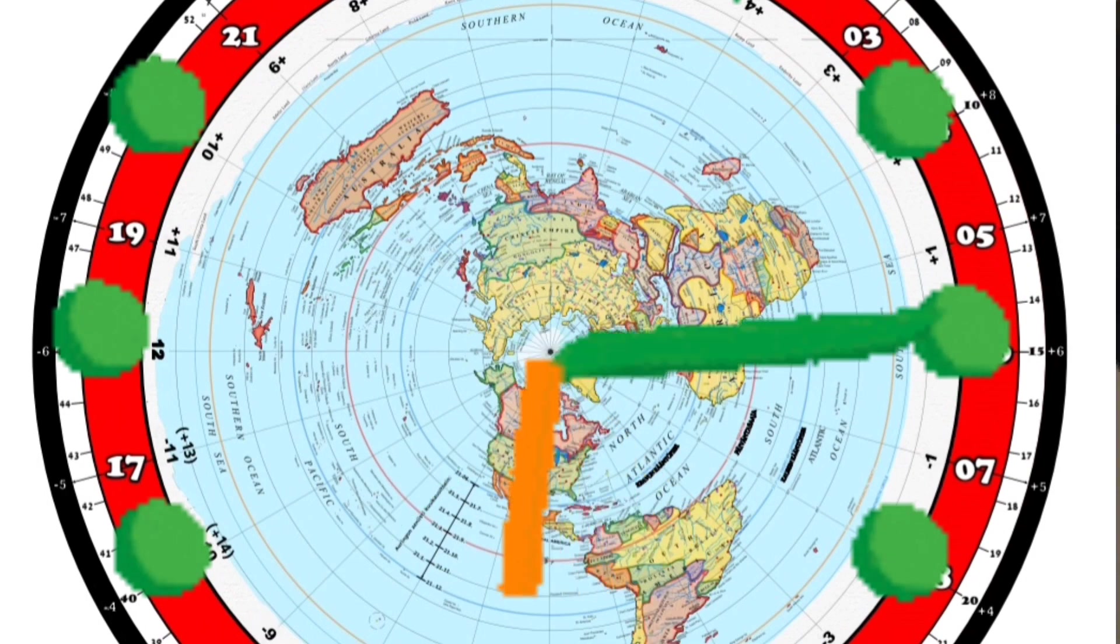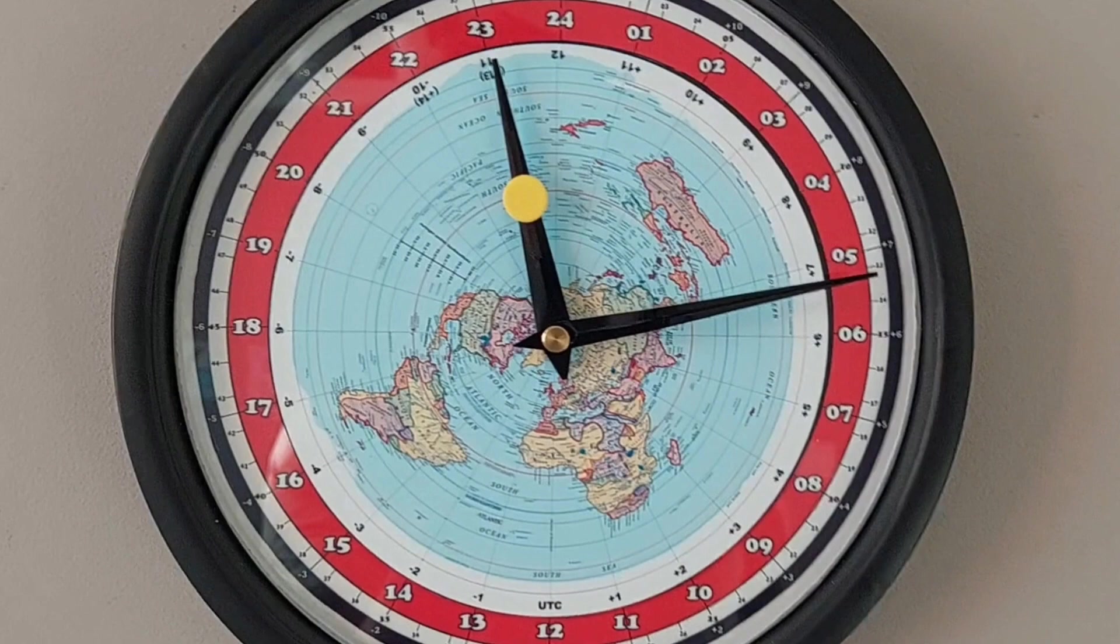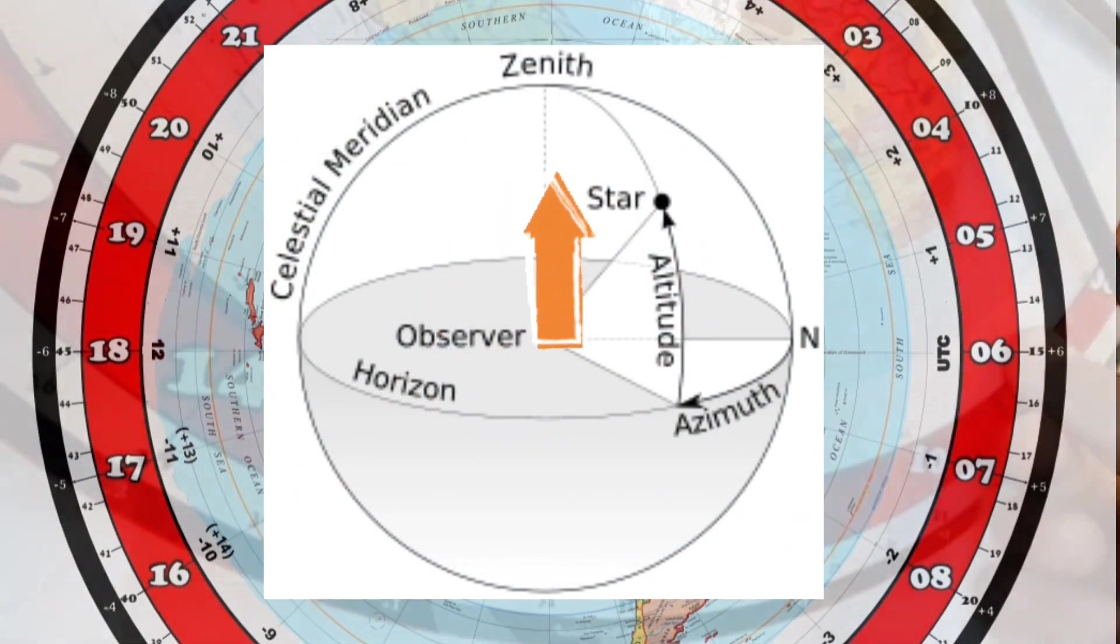Hour hand rotates one complete lap per day. The sun on the hour hand tells you in which time zone the sun is at the zenith at any given time. Zenith means directly above, 90 degrees from ground.